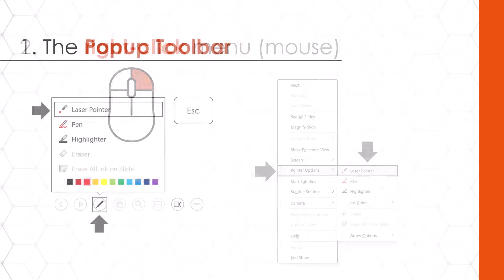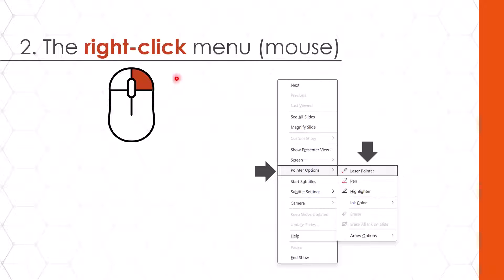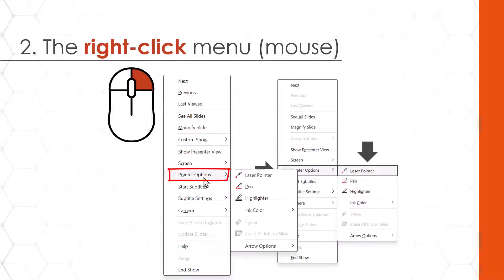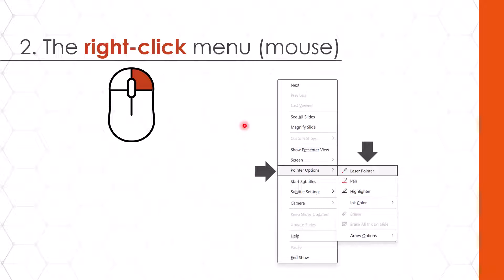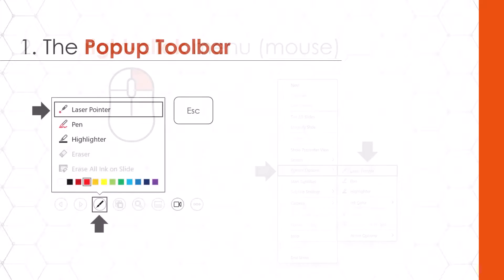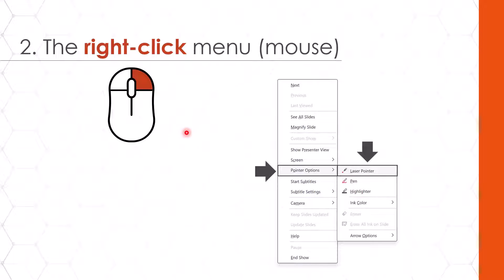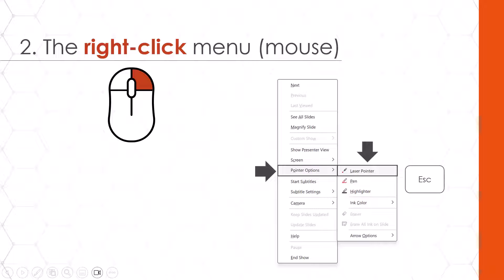Similar to the pop-up toolbar, we can also right-click with our mouse to get to the right-click pointer options and laser pointer menu. If I right-click here on my slide in presentation view, notice I have the pointer options and there's the laser pointer again. Selecting the laser pointer, I don't need to hold anything down on my keyboard. The laser pointer stays until I hit the escape key, at which point my laser pointer simply becomes my mouse cursor again.